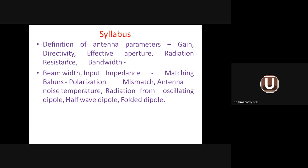Gain of an antenna means output divided by input — how much power is given to the antenna versus how much power is delivered to free space, by which we can calculate gain and directivity. All antennas are directional in nature: maximum radiation in a particular direction, minimum or zero radiation in other directions. That is called directivity.